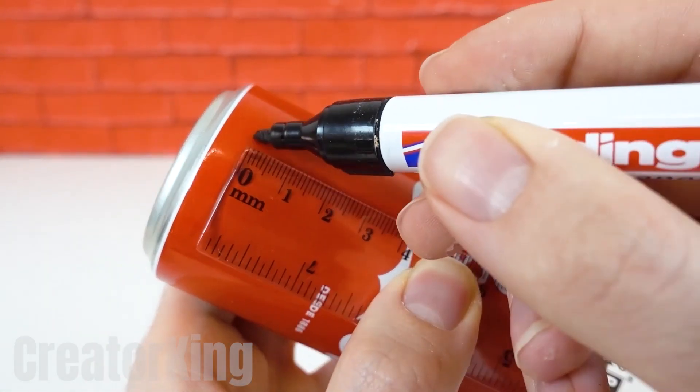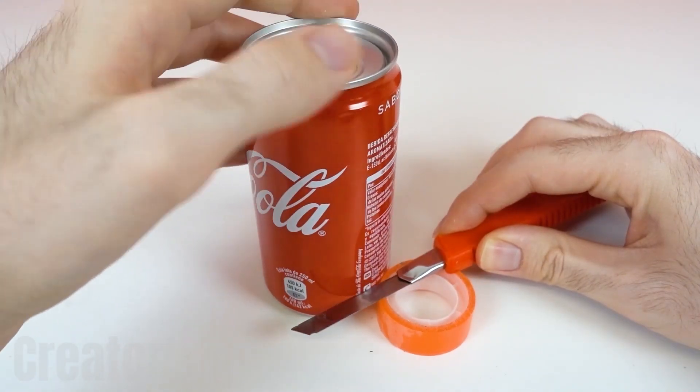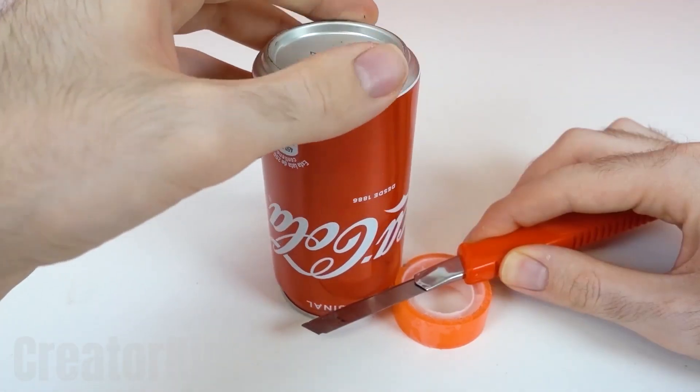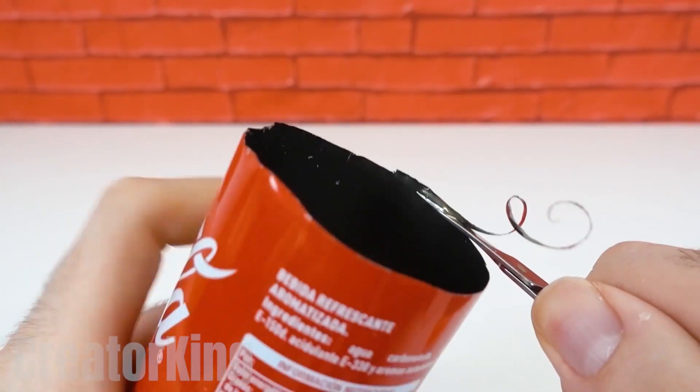After cleaning off the sugary residues, measure and mark 7 cm on the can to proceed with the slicing. Once cut, remove those dangerous rough edges with the help of a mini pair of scissors.